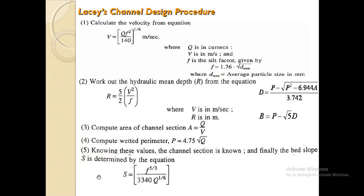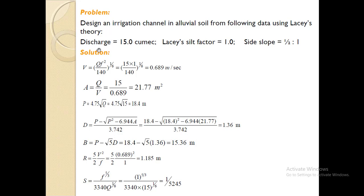We have a problem which we will solve using the defined Lacey procedure. The problem says: design an irrigation channel in alluvial soil using Lacey's theory from the following data. We are given the discharge, Lacey's silt factor, and side slopes. Note this is the side slope, not the bed slope. We have to calculate the bed slope, width of the channel, velocity, hydraulic radius, and flow depth from the given data using Lacey's formulas.